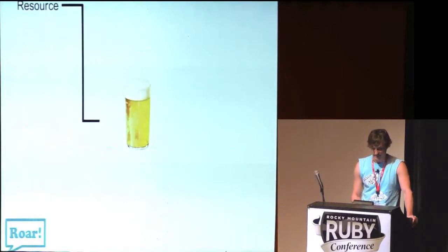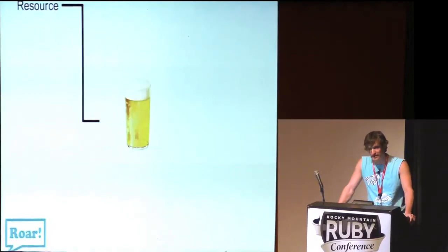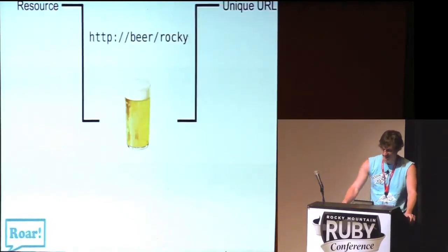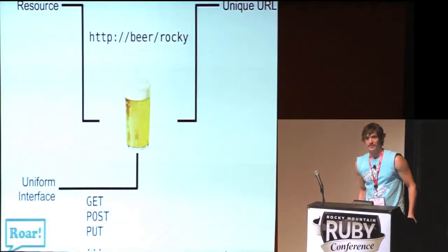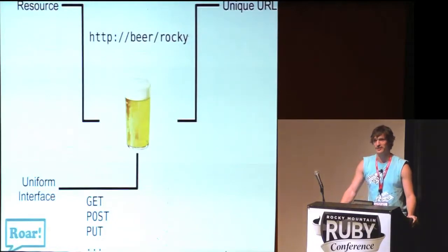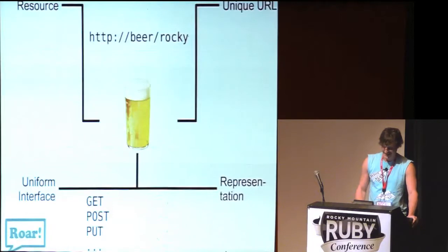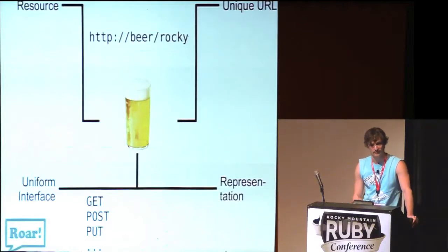The center of REST is the resource. A resource can be just anything — a beer representation, a news feed, the currently logged-in user, or whatever. Every resource in the REST system has a unique URL — a network address identifying that resource. You can manipulate that resource using the uniform interface: GET, POST, PUT, DELETE — roughly defining what these operations do on a resource. You can also manipulate resources using representations. That's the representational part of REST. REST is basically sending and retrieving documents — representations are documents.